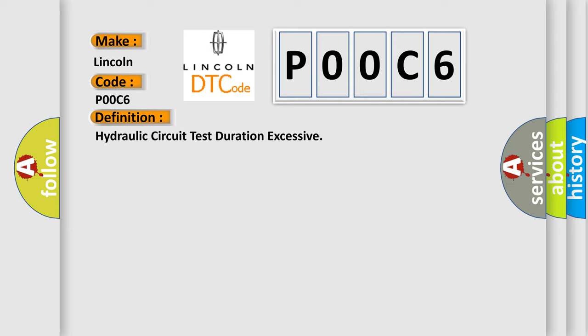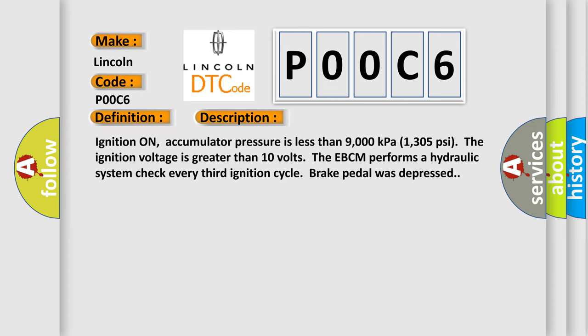And now this is a short description of this DTC code. Ignition on, accumulator pressure is less than 9000 kilopascals, 1305 psi. The ignition voltage is greater than 10 volts. The EBCM performs a hydraulic system check every third ignition cycle when the brake pedal was depressed.